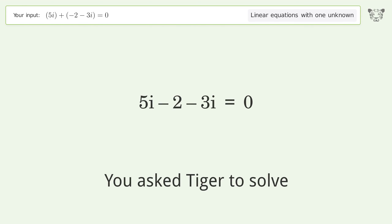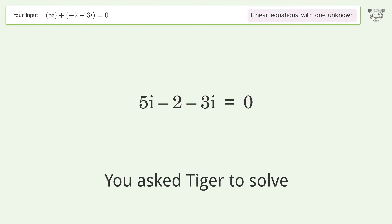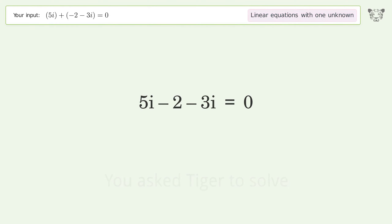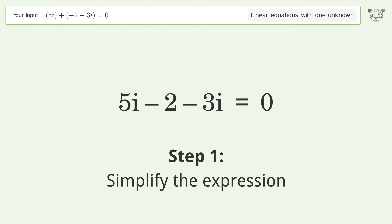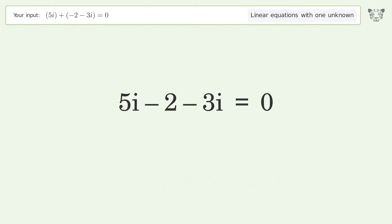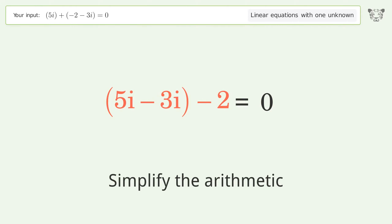You asked Tiger to solve this — it deals with linear equations with one unknown. The final result is i equals one. Let's solve it step by step: simplify the expression, group like terms, and simplify the arithmetic.